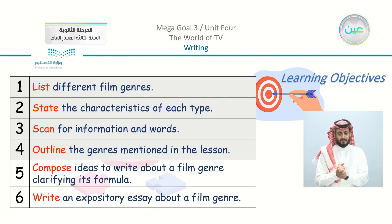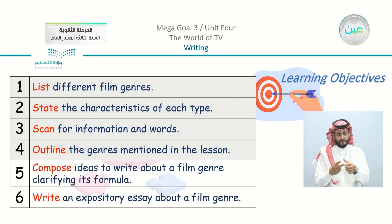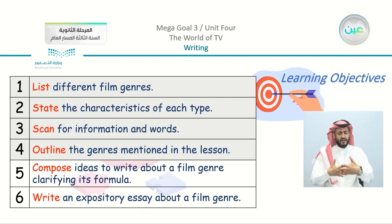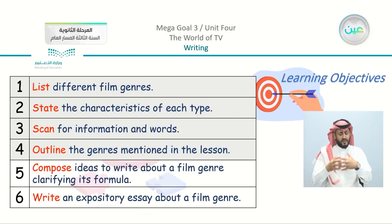You can see our objectives — some of them that we covered. We listed different film genres, stated the characteristics of each type, scanned for information and words, and outlined the genres mentioned in the lesson. We are now going to complete the writing lesson by composing ideas to write about a film genre, clarifying its formula, and writing an expository essay about a film genre.